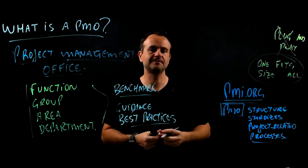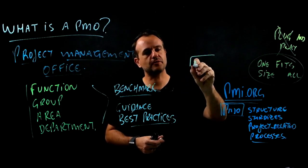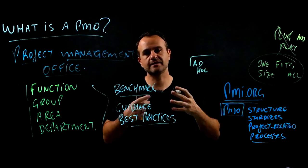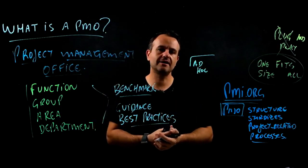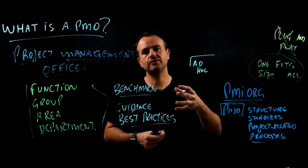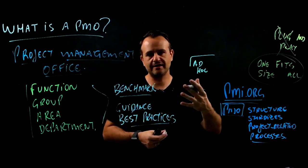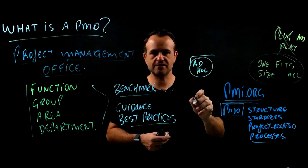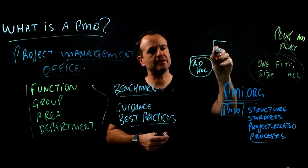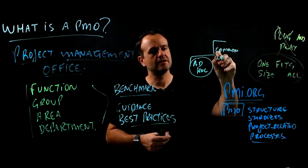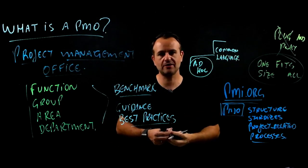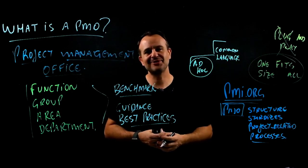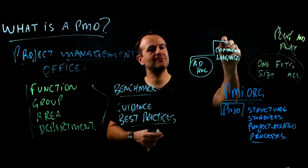The first step in project management adoption is ad hoc project management. You probably need to manage new business, new product development, new processes, and continuous improvement initiatives. You manage these temporary endeavors by creating a to-do list or using Microsoft Excel — it's not standardized, not using best practices. As you improve, you develop a common language and standards, adopting references like the PMBOK Guide, Prince2, Agile, or Scrum.